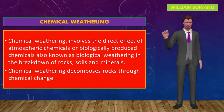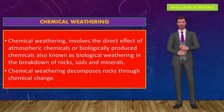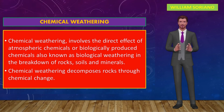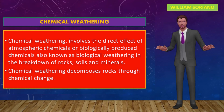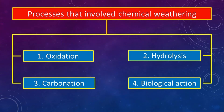The second type of weathering is chemical weathering. Chemical weathering involves the direct effect of atmospheric chemicals or biologically produced chemicals — also known as biological weathering — in the breakdown of rocks, soils, and minerals. Chemical weathering decomposes rocks through chemical change. The processes involved include: one, oxidation; two, hydrolysis or hydration; three, carbonation; and four, biological action.